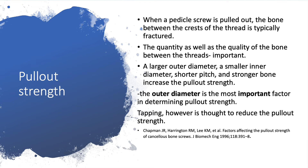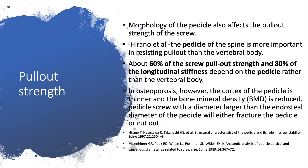Of all these factors, the outer diameter is the most important in determining pull-out strength. Tapping, however, is thought to reduce pull-out strength, especially in osteoporotic bones. Morphology of the pedicle itself also affects pull-out strength. Studies prove that the pedicle of the spine is more important in resisting pull-out or cut-out than the vertebral body itself.